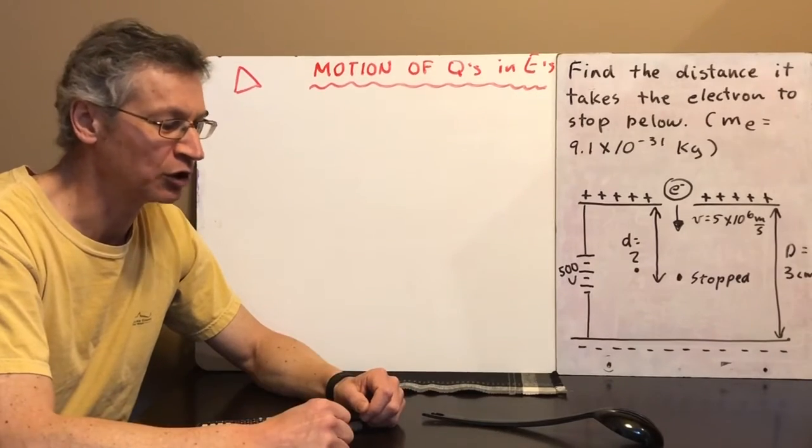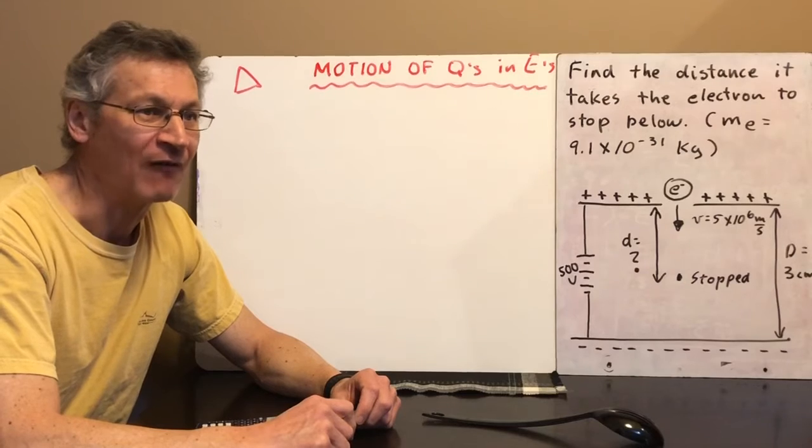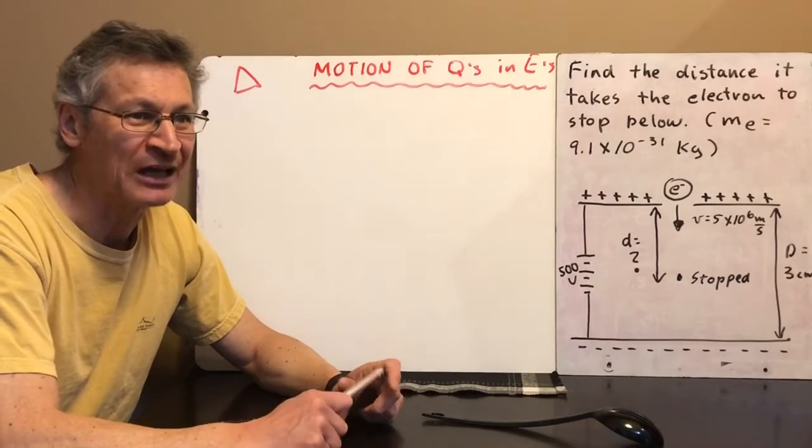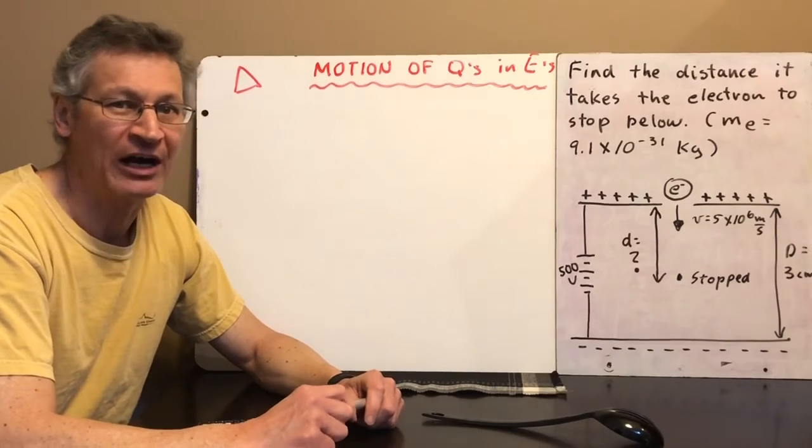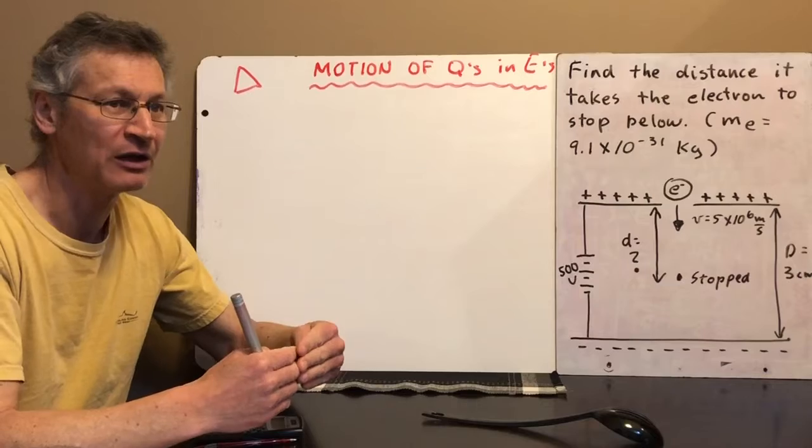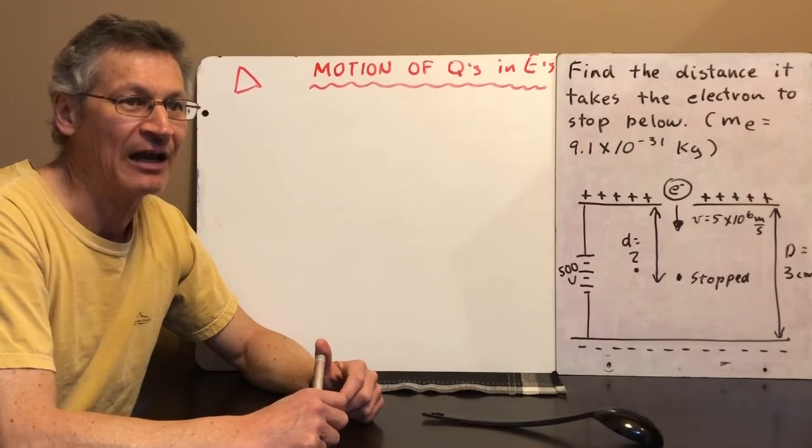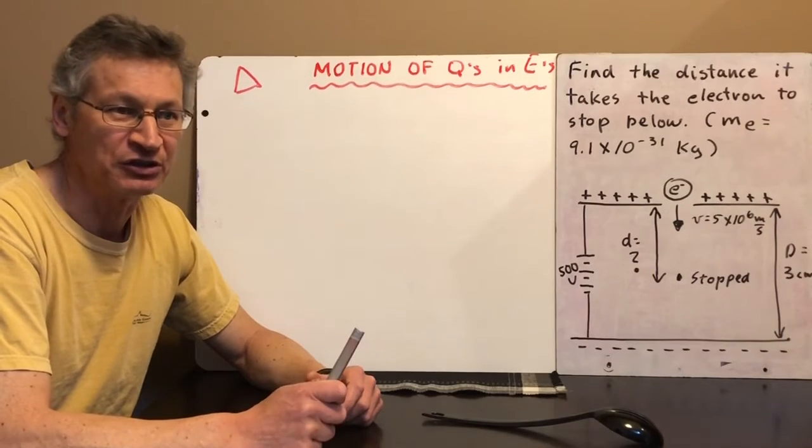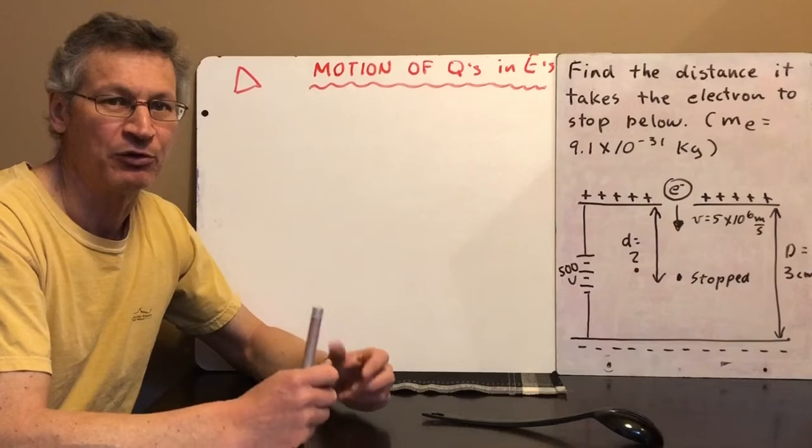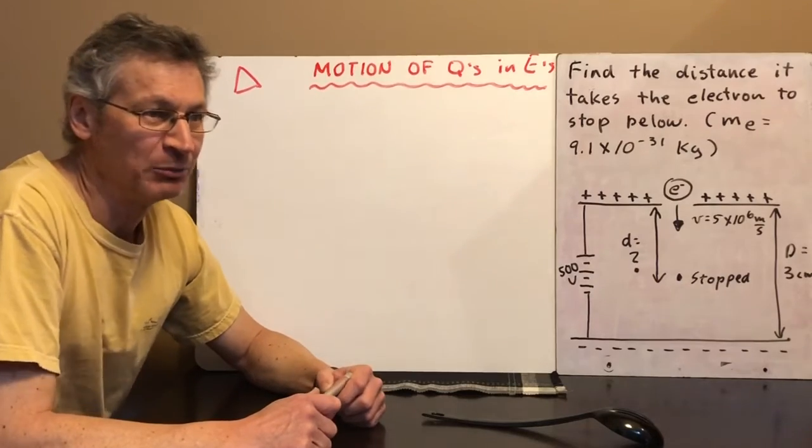Another application of charges moving in electric fields is, believe it or not, when athletes are tested for banned substances. Many times, urine samples from the athletes are actually ionized and the positive ions are accelerated through an electric field and it's timed how long they take to get through this electric field and the banned substances, their molecules are usually bigger so they take a longer time to get through the electric field and if that's the case then they know that the athlete has been cheating.